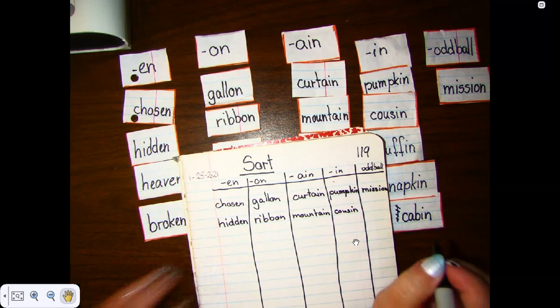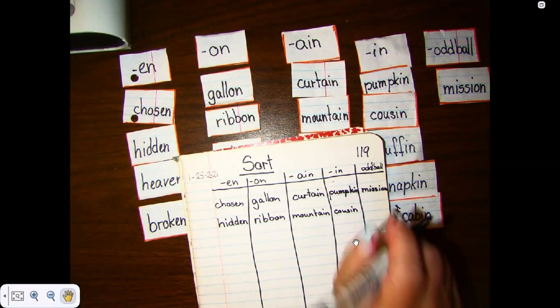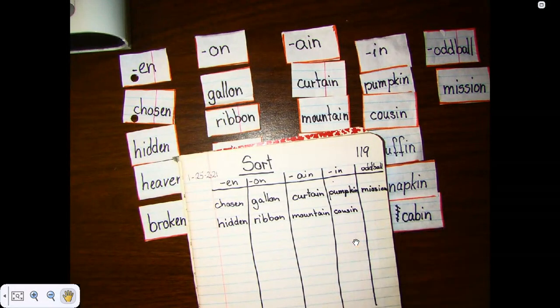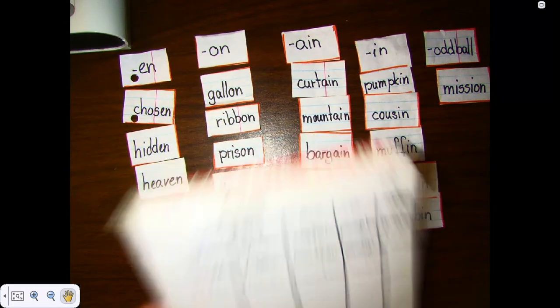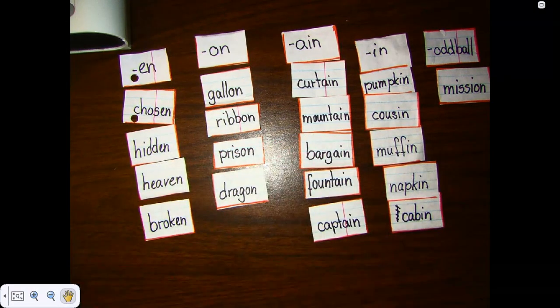All right. Now that you have written down all your words, take a picture and post it on Class Dojo. If you have not written down all your words, go ahead and finish the rest of them. Remember, you have to write all the words from our word sort. Happy writing. Let me see what you did.